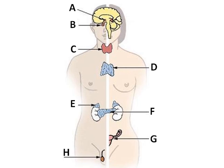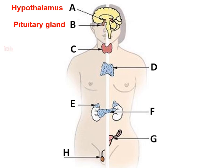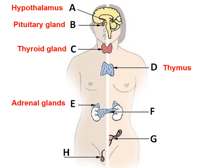Now pause the video and try to label parts A through H on the diagram. The answers are: A — hypothalamus, B — pituitary gland, C — thyroid gland, D — thymus, E — adrenal glands, F — pancreas, G — ovaries, and H — testes.